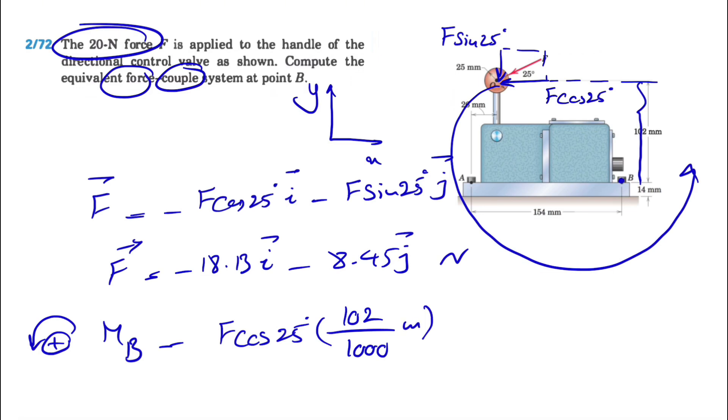That's the moment of the x component. We also have the moment of the y component, which is also counterclockwise, so plus f sine of 25 degrees. The distance this time would be from B to here, which is from point A to B minus from point A to here, which is 154 minus 26.